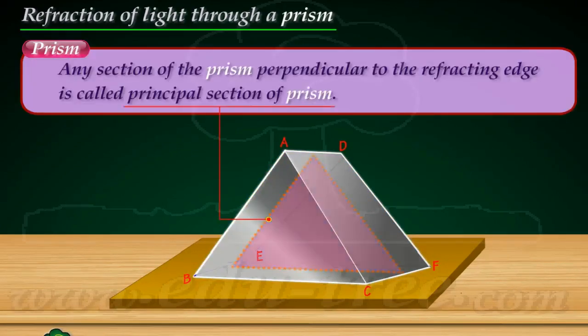Any section of the prism perpendicular to the refracting edge is called the principal section of the prism.